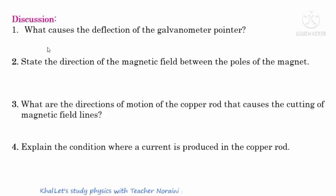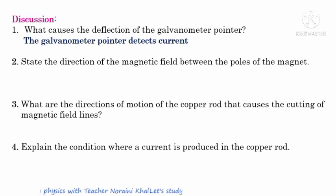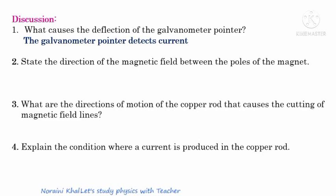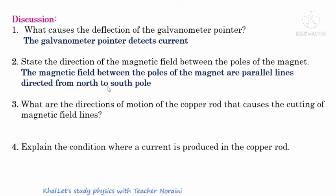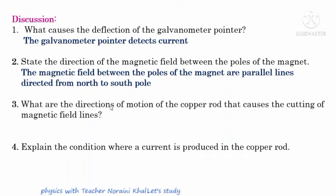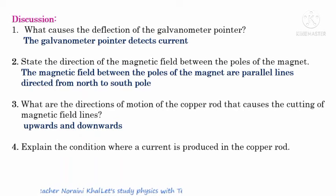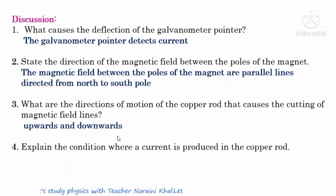Let's discuss some questions. What causes deflection of the galvanometer pointer? The function of the galvanometer is to detect current, so deflection shows that current is detected. The direction of the magnetic field between the poles of a magnet is always from north to south pole — the magnetic field lines are parallel, directed from north to south. The directions of motion of the copper rod that cause cutting of magnetic field lines are upwards and downwards. When moved parallel to the magnetic field lines, there is no deflection.